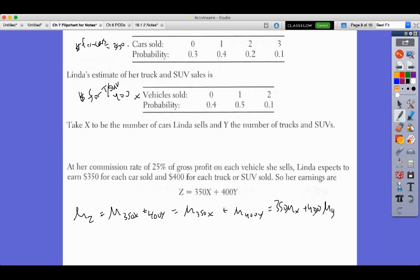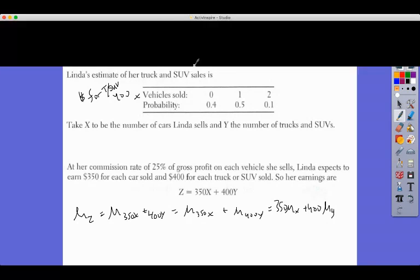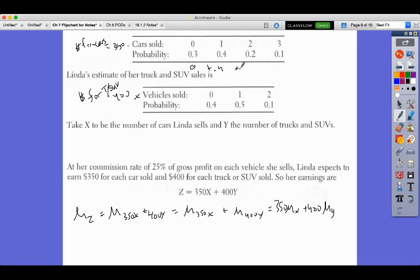So, the math is exactly what you'd expect. So, if we had the mean of this, which I think it was 1.1. That's 0 plus 0.4 plus 0.4 plus 0.3. We get 1.1. And so, 350 times that is 385 plus. Here, we just get 0.5 and 0.2. And so, this is coming out to 0.7. So, if we do 400 times 0.7, we get 280.